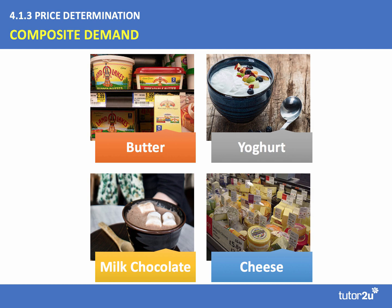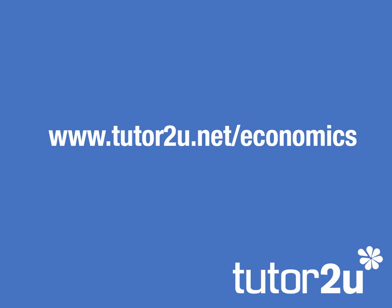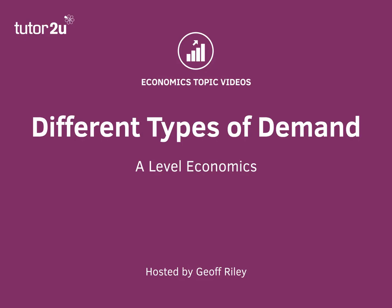So we've been through four types: effective demand, composite demand, derived demand, and joint demand. All of these can be found in more detail and with more notes on our website of course. I hope you found this little video useful for looking at the different types of demand.